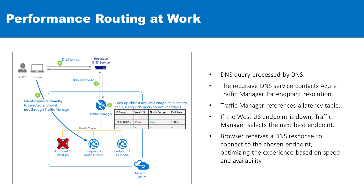It will then select the next closest available endpoint with acceptable latency — in this case, maybe endpoint 2 in North Europe or even endpoint 3 in East Asia. The DNS response guides the browser to connect directly to the selected endpoint, ensuring that the user's experience is optimized for speed despite any regional endpoint issues.